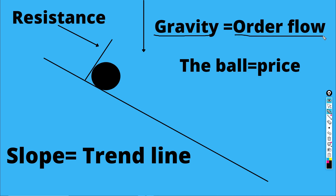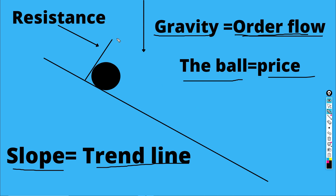Gravity we can relate to the order flow in the market. When hundreds of thousands of people are buying and selling, that is order flow. When you see a downward trend, the order flow or gravity is down. The ball we consider as current price, gravity is order flow, and the slope is the trend line. The price follows the trend line and starts to fall down.